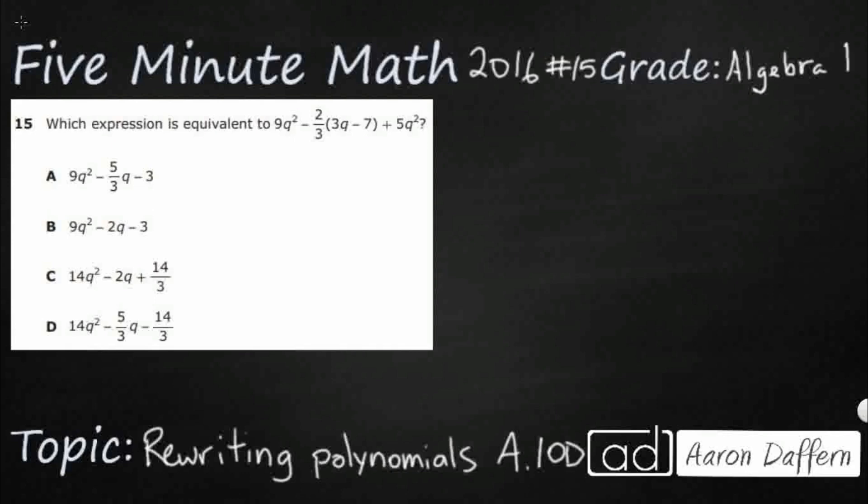So we have an expression that we need to find an equivalent expression. There are two different things that we need to keep in mind. First we need to deal with this two-thirds that's being multiplied by the 3q minus 7. We need to keep in mind something that we have learned years ago, but we might not necessarily know by name. It's the distributive property of multiplication.